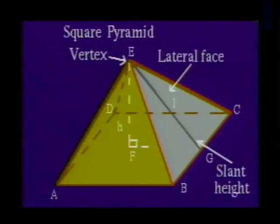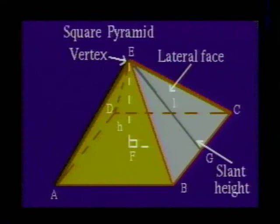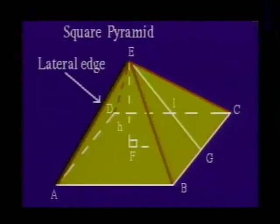The triangular faces formed by joining the consecutive vertices of the base to the vertex of the pyramid are called lateral faces. The lateral faces in a regular pyramid are congruent isosceles triangles. The slant height of a regular pyramid is the altitude of a lateral face. The intersections of the lateral faces are called the lateral edges.